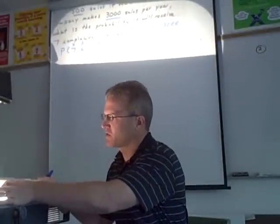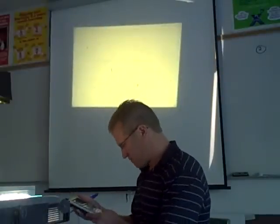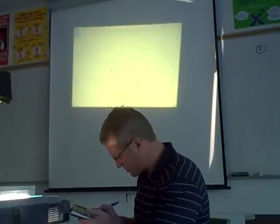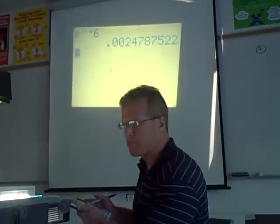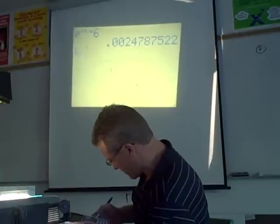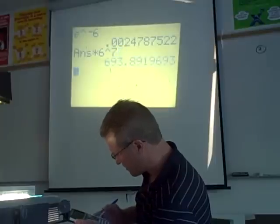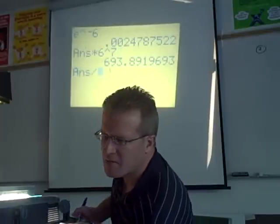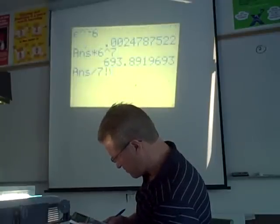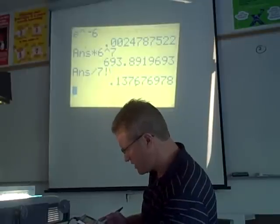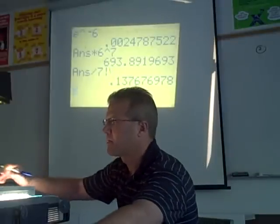So I'm going to take this off. So it's E to the negative sixth times six to the seventh, divided by seven factorial. So again, it's second divide as your E, to the power of negative six. So that's that decimal, times six to the seventh power, gives me that answer, and then divide by seven factorial, 0.138 rounded. Any questions about how I type that in?